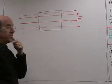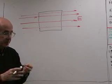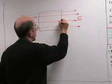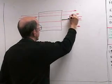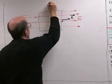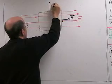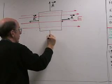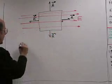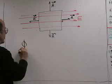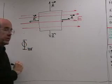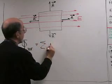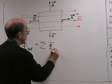We have to define a positive direction. So for each of these surfaces, let's define an area vector. The total flux going through this box is just going to be the sum of all the fluxes going through each of the sides.